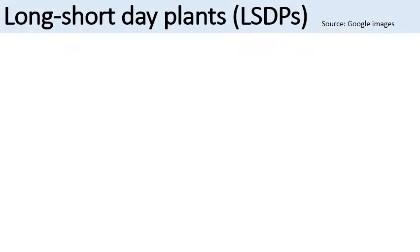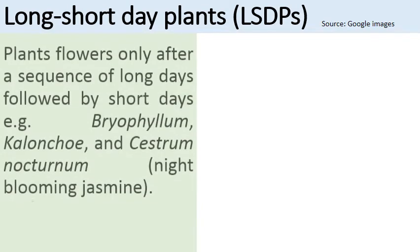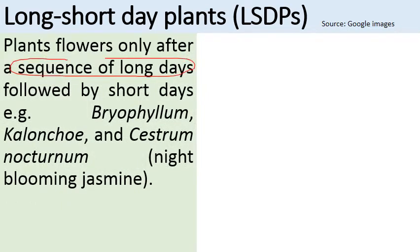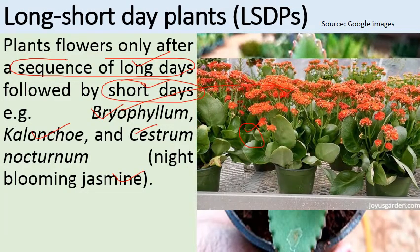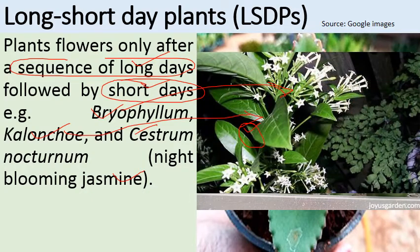Long-short day plants flower only when long days are followed by short days. These plants require initially a long day duration, followed by short day durations, for flowering to occur. Examples are Bryophyllum, Kalanchoe, and Cestrum nocturnum, commonly known as night-blooming jasmine. Bryophyllum is a commonly studied plant where leaf buds help in vegetative propagation.